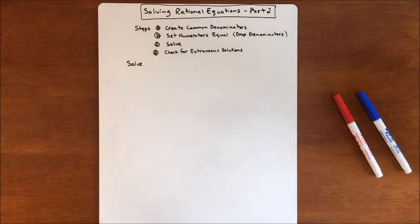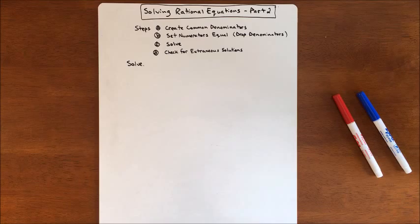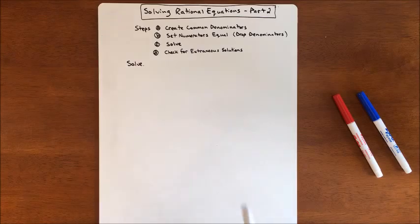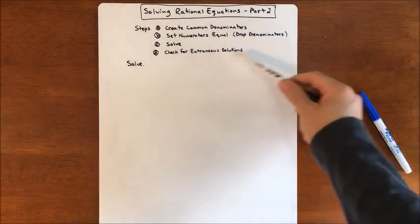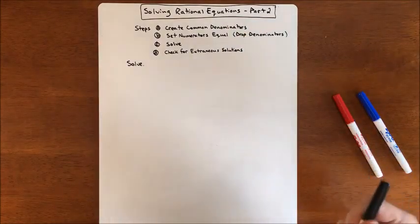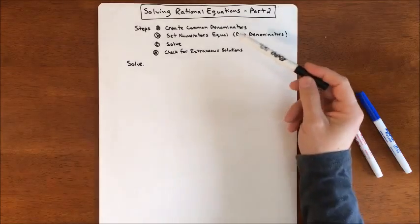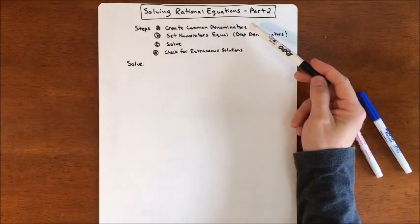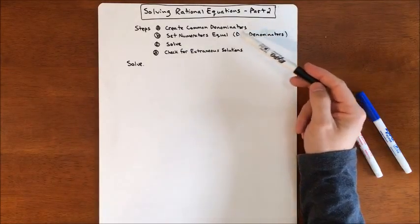In this lesson, we're going to be solving rational equations — this is the second part. We did five problems already related to this, and we're going to do a couple more, a little bit more complicated. But this is pretty much going to be our common theme every single time: we're going to try and create common denominators.